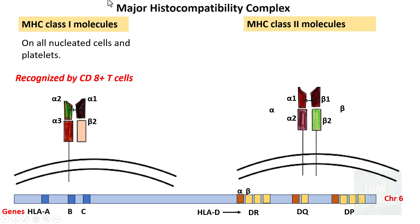Moving on to MHC class 2 molecules: the genes encoding this molecule are the HLA-D genes, and within the HLA-D region you have HLA-DR, HLA-DQ, and HLA-DP. In contrast to MHC class 1, MHC class 2 molecules contain two chains: an alpha chain and a beta chain, both of which span across the cell membrane. The alpha chain has two subunits — alpha 1 and alpha 2 — and the beta chain has two domains: beta 1 and beta 2.